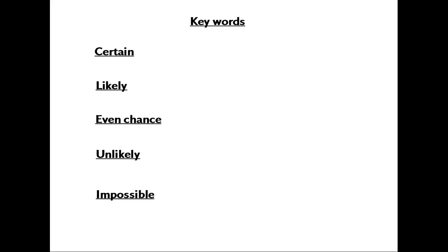First, I want to cover some important words that you might find are the actual answers to questions. The first of those is the word 'certain' — something that is certain to happen. For instance, if I toss a coin I will get either a head or a tail. That is certain; there are no other options. If something is 'likely,' it doesn't mean it's absolutely certain, but it's probably going to happen.